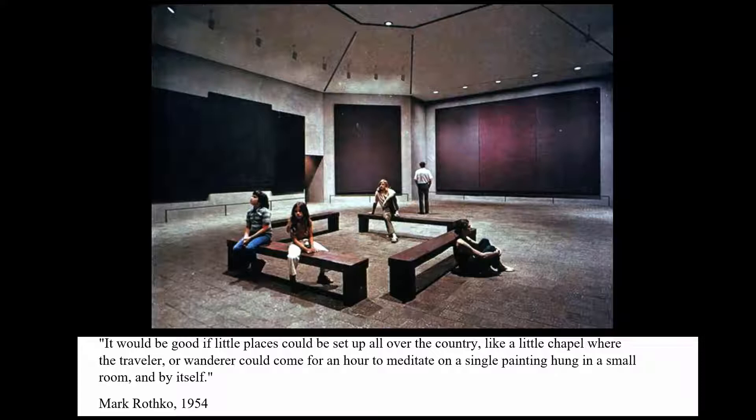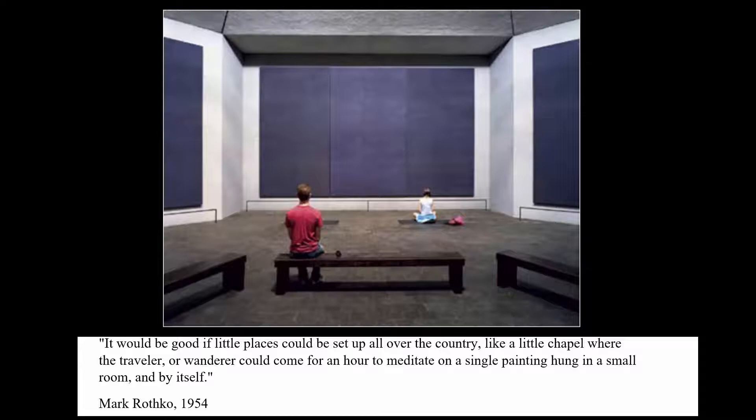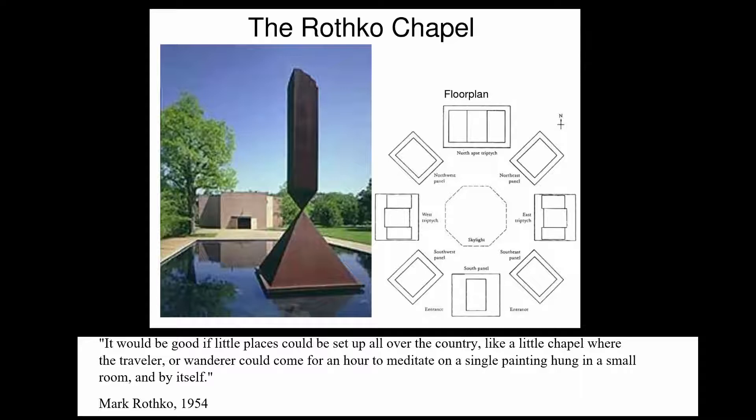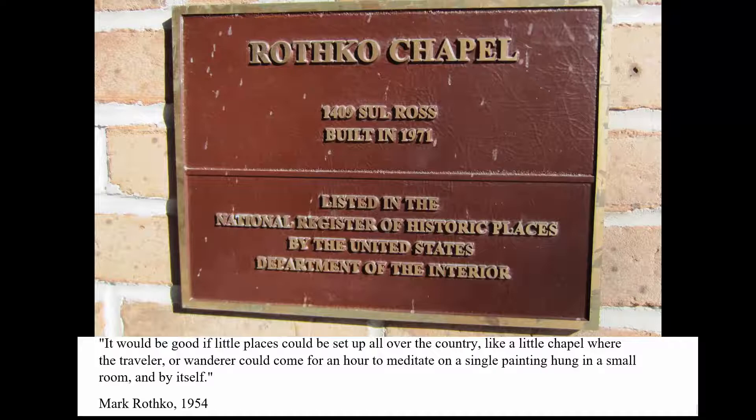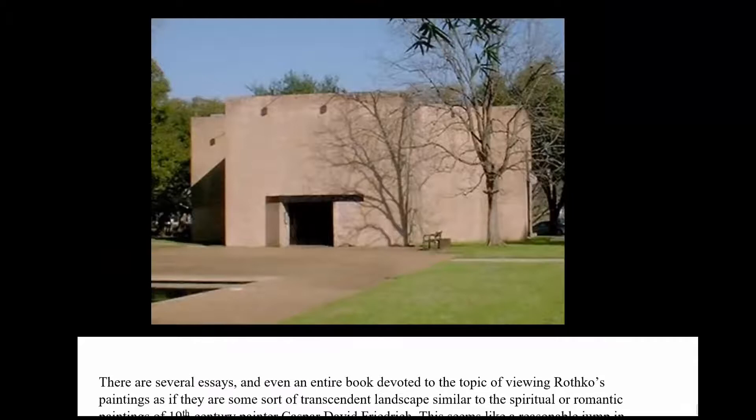Rothko himself basically said he was trying to get to some spiritual essence. He says: 'It would be good if little places could be set up all over the country, like a little chapel where a traveler or wanderer could come for an hour to meditate on a single painting hung in a small room and by itself.' That vision was later turned into the Rothko Chapel in 1965.